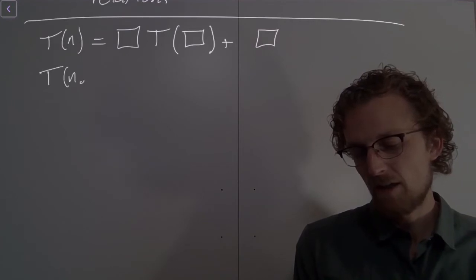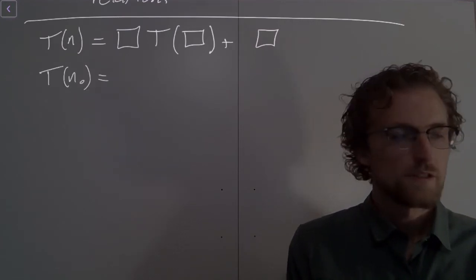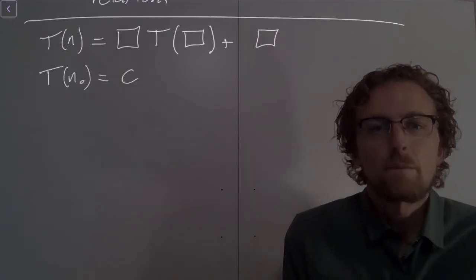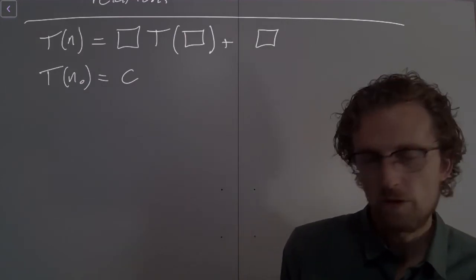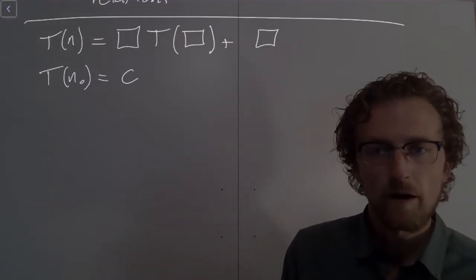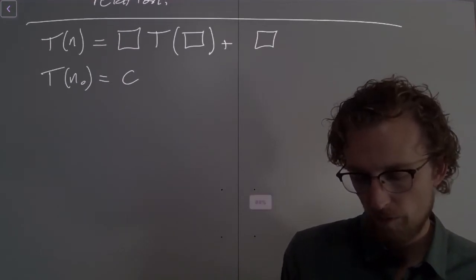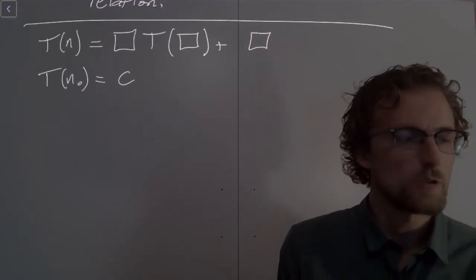So there's always going to be a T(n0) equals something, right? There's always going to be something there. You can never have a recurrence relation that doesn't tell you where it terminates, right? That's a critical piece of this, and it's not a complete recurrence relation without that.